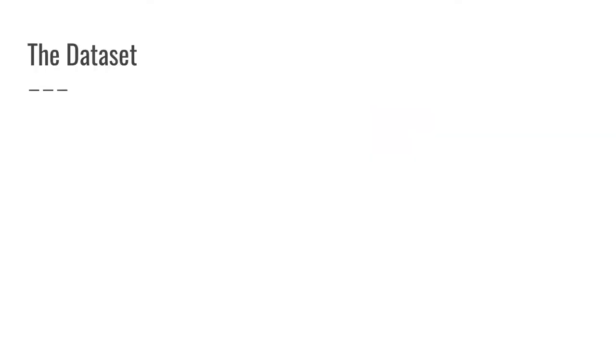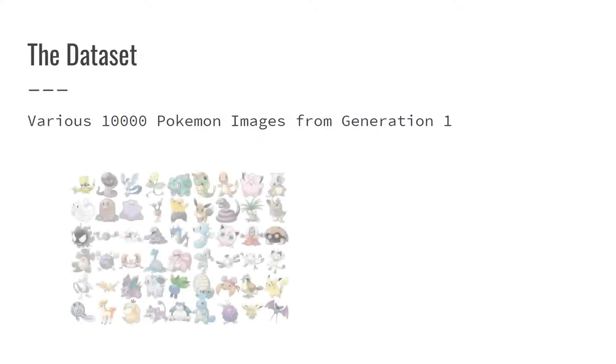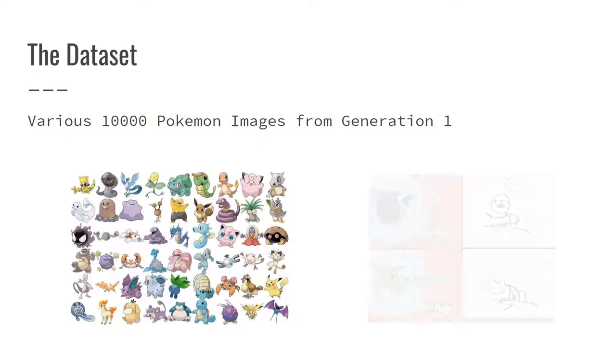We will obtain our dataset from the website Kaggle. Although it is only one dataset, it contains around 10,000 images of Pokemon from generation 1. Furthermore, the images are filled with variations, from images in the game to fan art and merchandise.